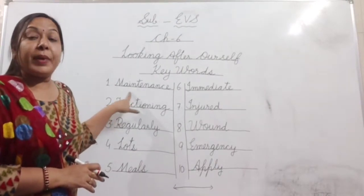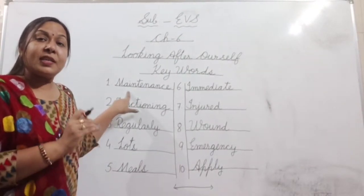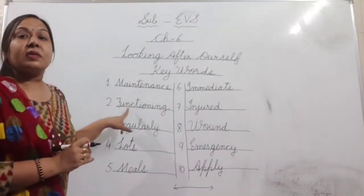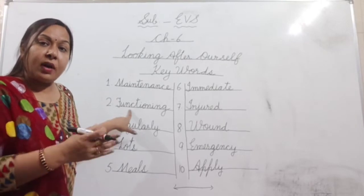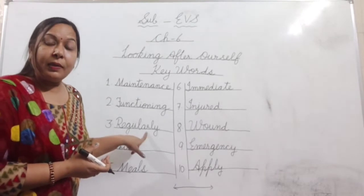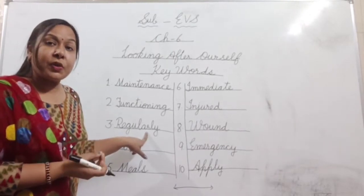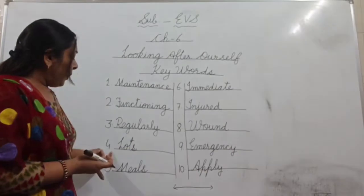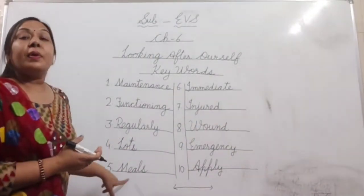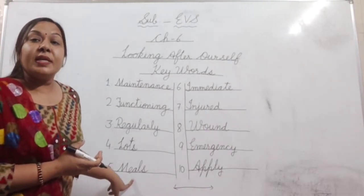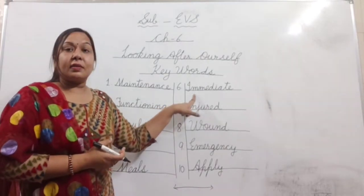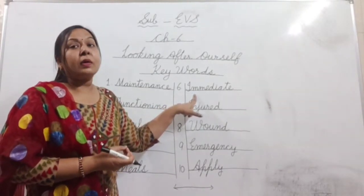So let's revise: Number one — maintenance, means preservation, the process to keep something. Number two — functioning, means to work or to perform. Number three — regularly, means habitually or usually. Number four — lots, means very much. Number five — meals, means food. Number six — immediate, means instant or quick.